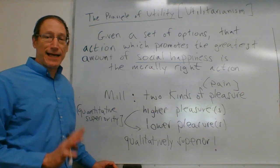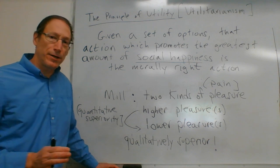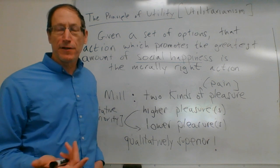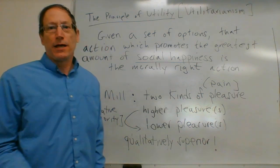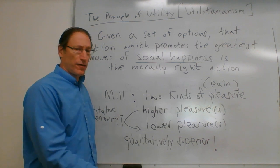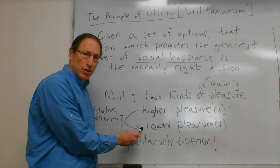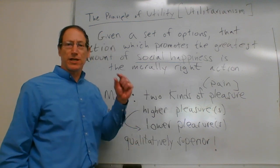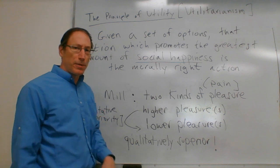That is Mill's answer to the hedonism objection. Now, there is much to discuss: do we agree that there are two kinds of pleasures? And do we agree that mental pleasures are qualitatively superior — such that even a small amount of higher pleasure should be better in its pleasure than lower pleasures?